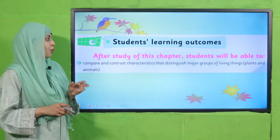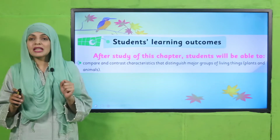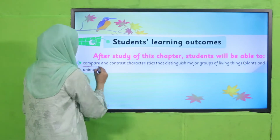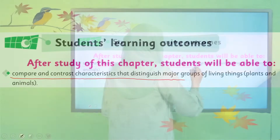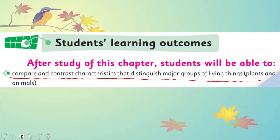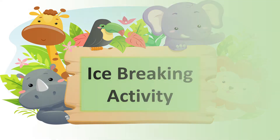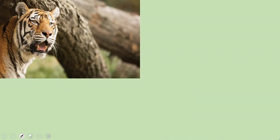In today's lecture, all students will be able to compare and contrast characteristics that distinguish major groups of living things — plants and animals — and specifically we will discuss sense and respond, and excretion. Now let's move forward towards an activity. Quickly look at these pictures: here you can see a tiger and a plant, both are living things.